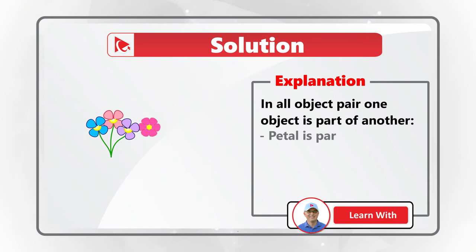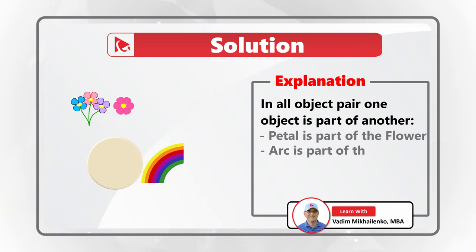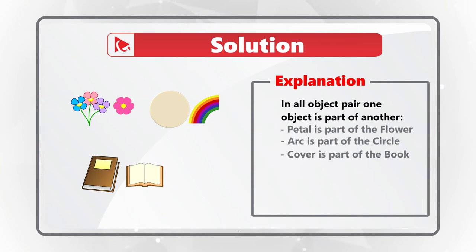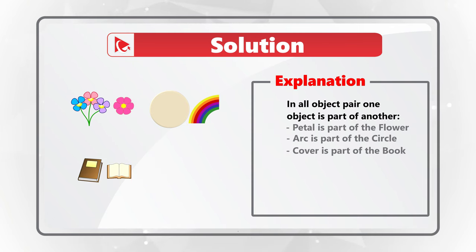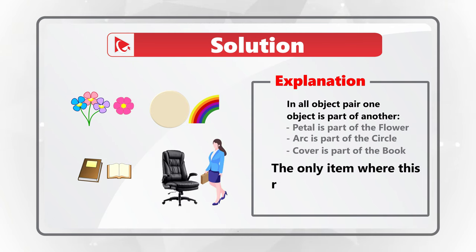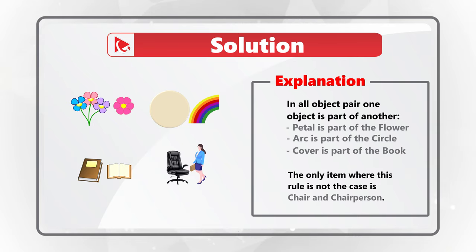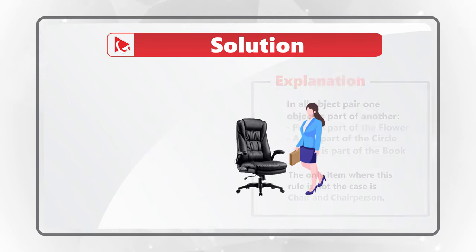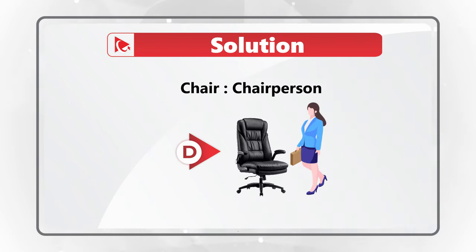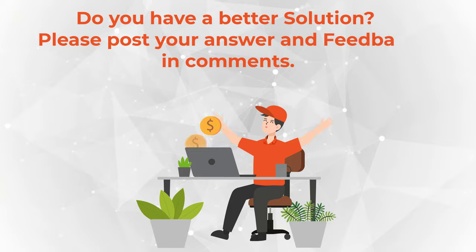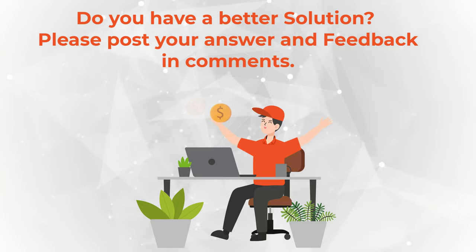Petal is part of the flower. Arc is part of the circle. And cover is part of the book. The only word pair where this rule does not work is chair and chairperson. Even though these words sound similar, they are not part of each other. So the correct answer is choice D, chair and chairperson. Hopefully you've nailed this question and now know how to answer similar problems on the test.